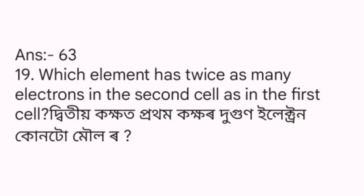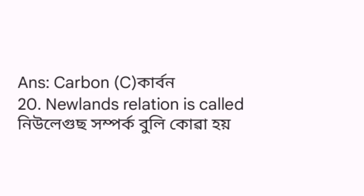Nineteenth question: Which element has twice as many electrons in the second shell as in the first shell? The answer is carbon. Twentieth question: What is the Law of Octaves also known as?